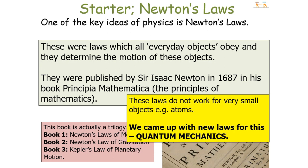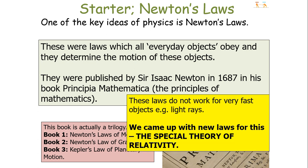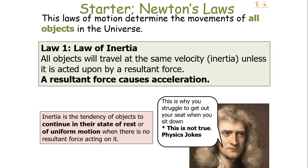Unfortunately, these laws don't work with very small objects such as atoms, so we came up with a new set of laws for them called quantum mechanics. And they don't work with very, very fast objects such as light rays, so we came up with new laws called the Special Theory of Relativity. But every object in between will obey Newton's Laws of Motion, which determine the movements of all objects we experience as human beings on an everyday basis.